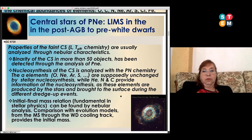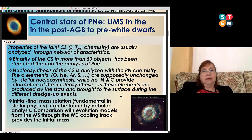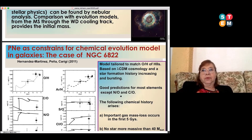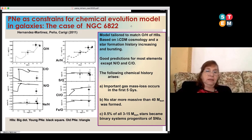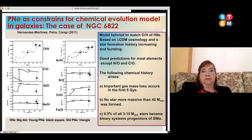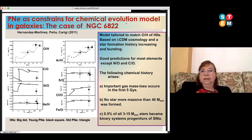Comparing stellar evolution models from the main sequence through the white dwarf cooling track can provide the initial masses of the stars. I'm going to show you now one work we have obtained here in Mexico in collaboration with Liliane Hernandez-Martinez, Letizia Carigi, and myself. We use nebulae as constraints for a chemical evolution model in the galaxy NGC 6822, which is an irregular galaxy. We built a model tailored to match the oxygen abundance in HII regions in this galaxy.